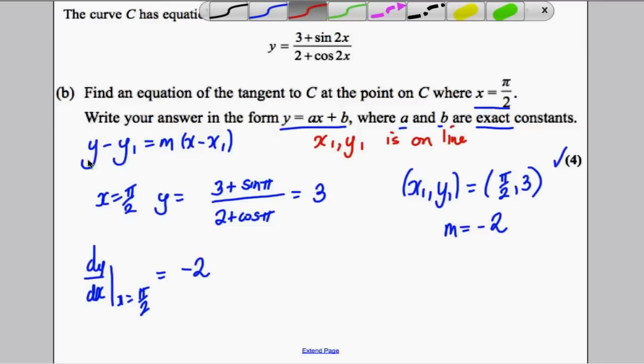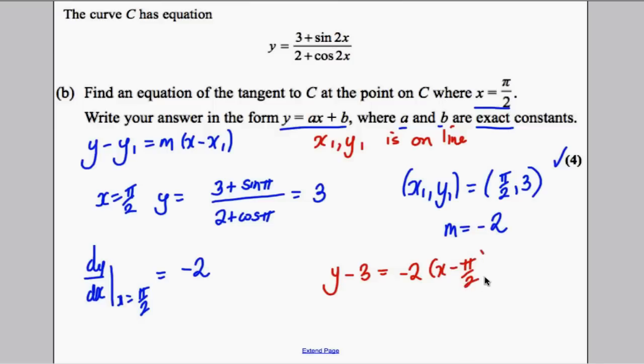So using the equation of a straight line, we will be dealing with y subtract 3 is equal to negative 2(x subtract pi by 2). OK, let's multiply this out. y subtract 3 is negative 2x plus pi. And therefore, adding 3 to both sides, y is equal to negative 2x and then plus pi plus 3. OK, the pi plus 3 is your number b and negative 2 is your number a and you're done.